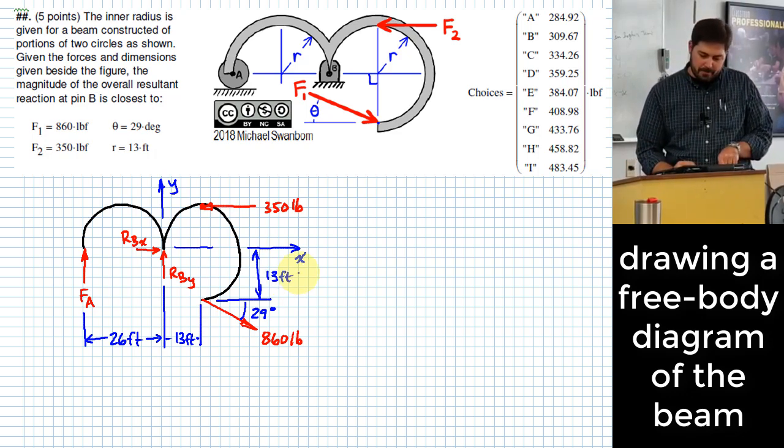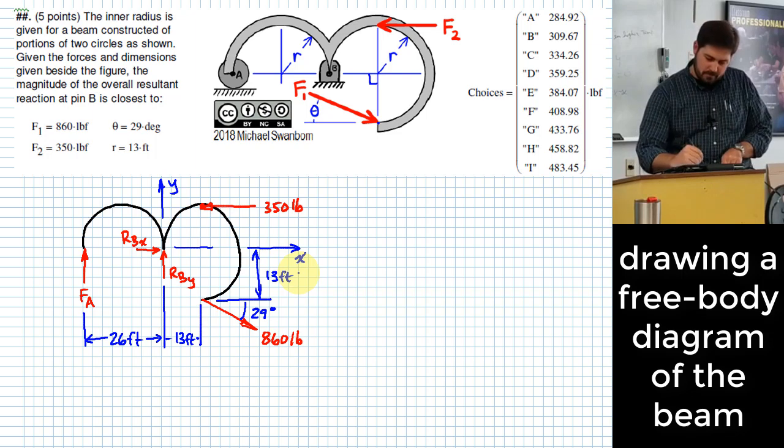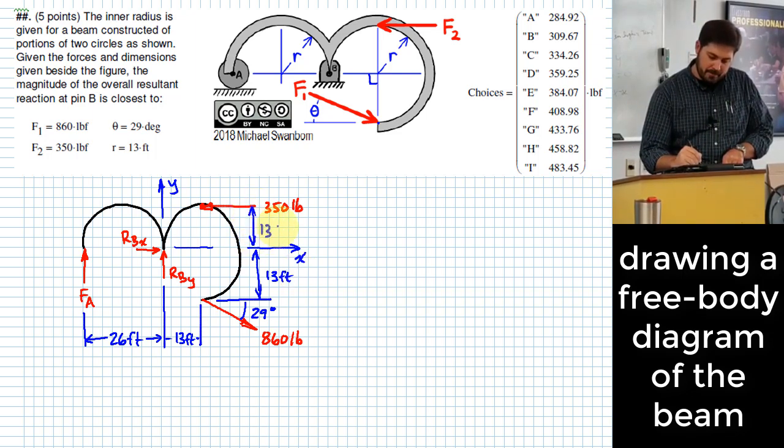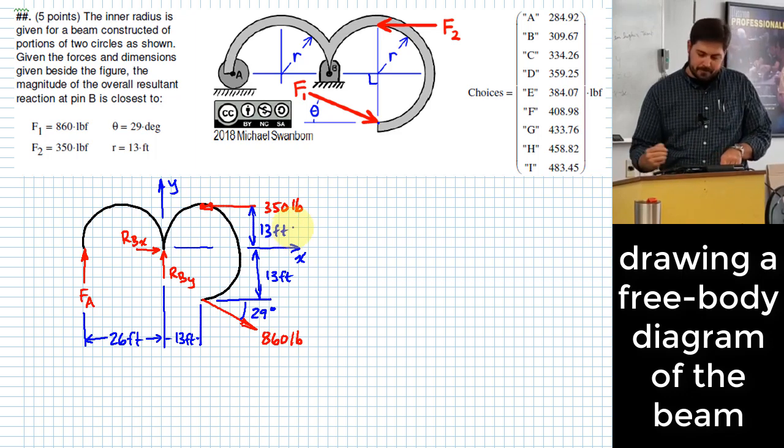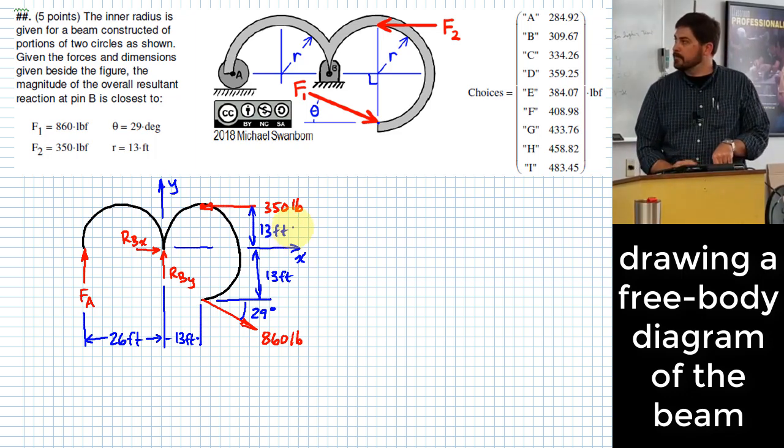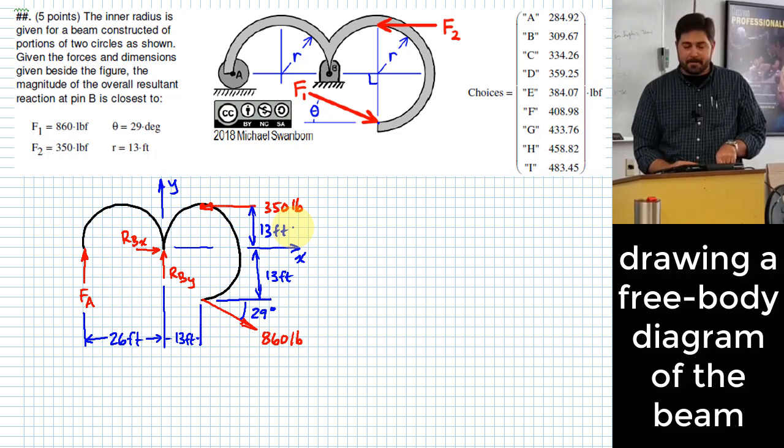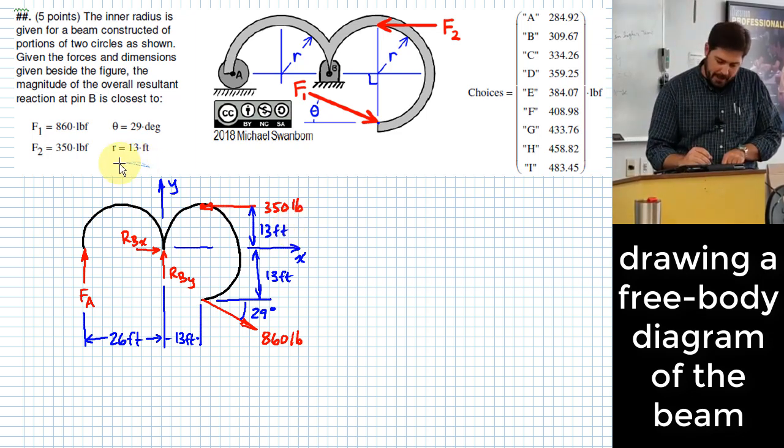What else might matter? Maybe that this is 13 feet here. And that should be about everything that I might need on my free body diagram. So what do I do with all that?